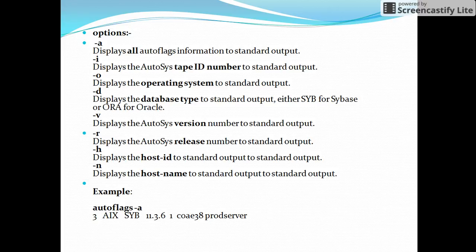With the option -a, autoflag -a displays all information. If you want individual information — like what is the operating system the autosys server is using, what is the database it is fetching from, what is the host name, what is the host ID, what is the autosys version it is using, or what is the release number — then we have to go for other options.